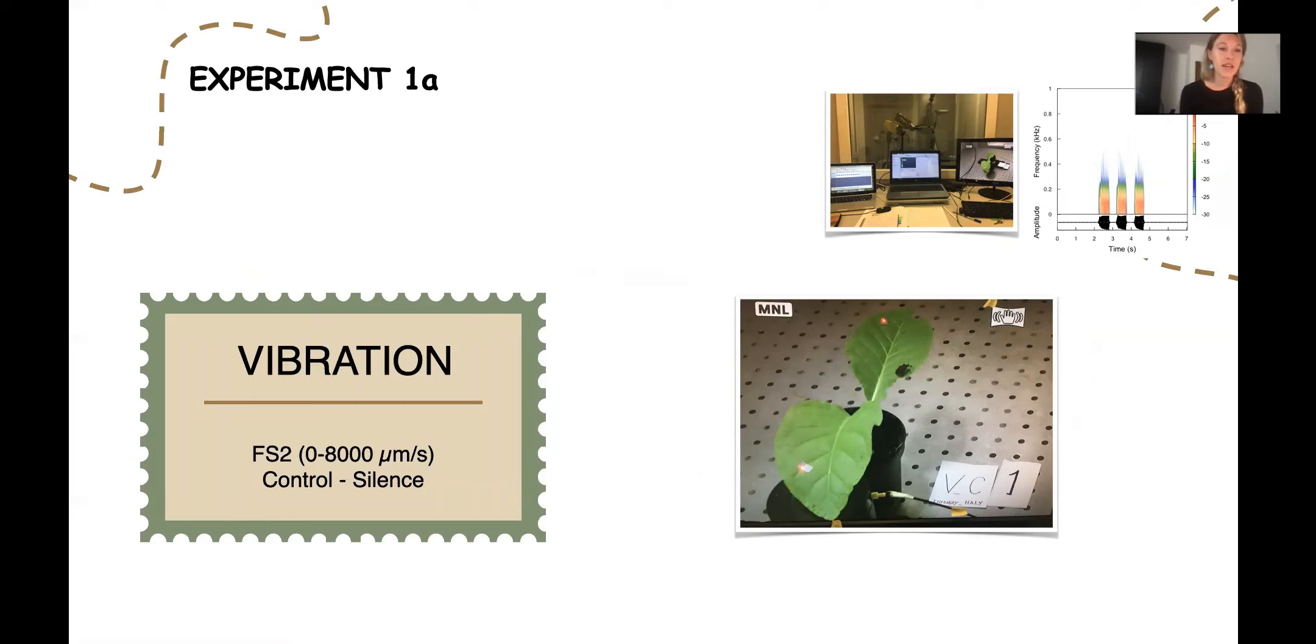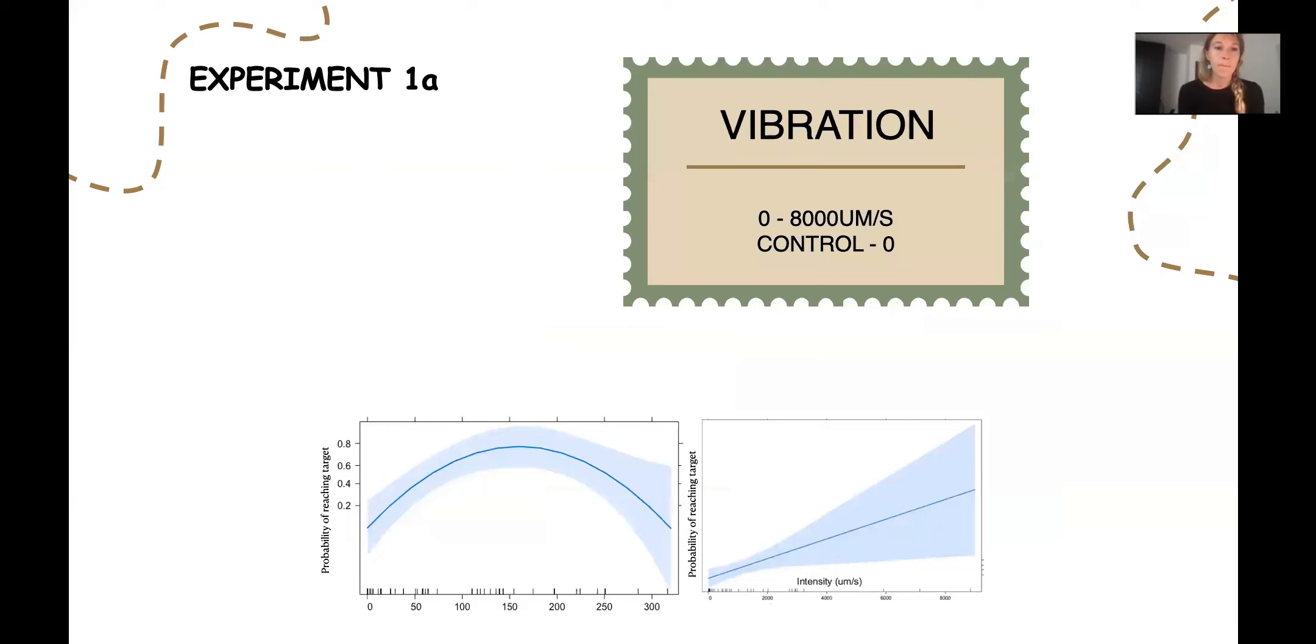Our first experiment aimed to understand an optimal range of signal intensity. The release point was on a bean leaf. The animal was placed on one of the leaves and the mini shaker with the signal was placed on the other leaf. Males were individually tested with randomized intensities in a scale from zero to 8000 micrometers per second, using the silence as a control. We tested the response of reaching the source of the mini shaker.